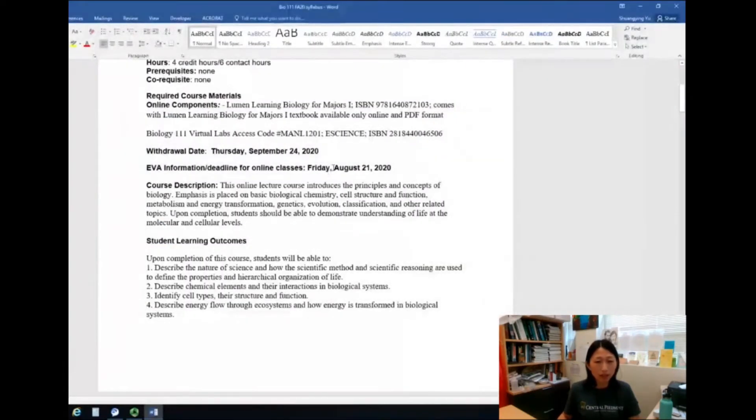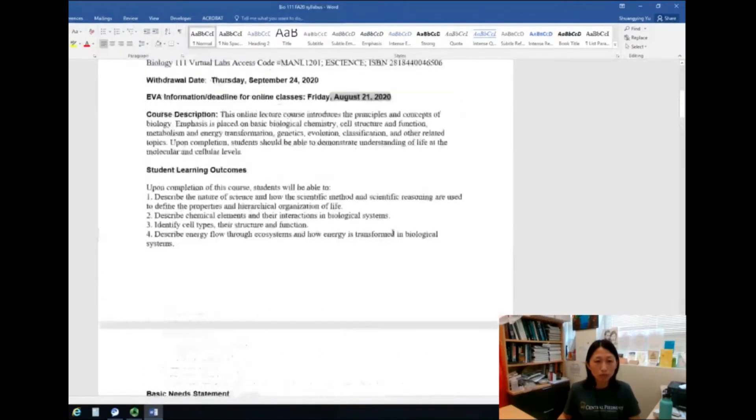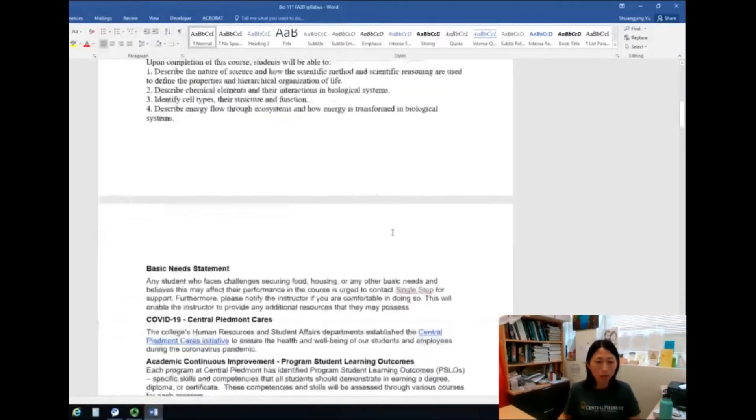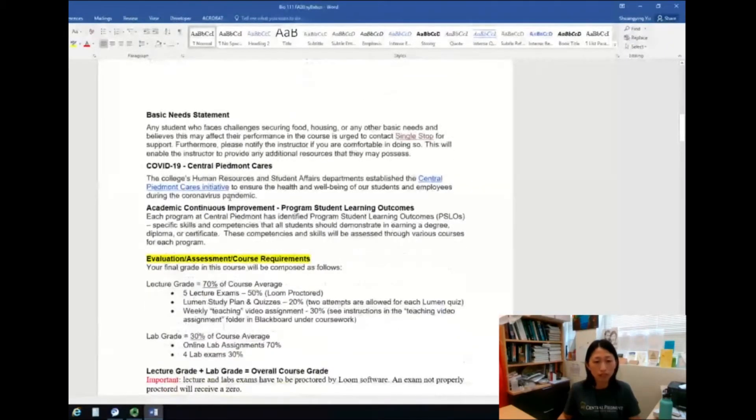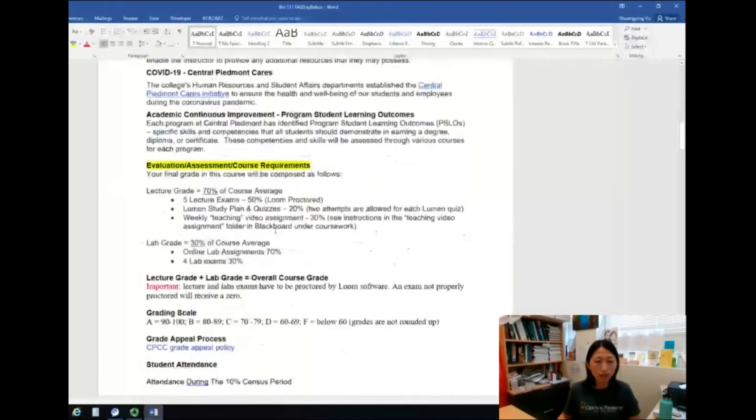The deadline for EVA is August 21st, so the end of August 21st, which is 11:59 p.m. You will read the learning outcomes, course description, related to COVID-19, things like that. Let's get to the good stuff. Evaluation, assessment and course requirements.